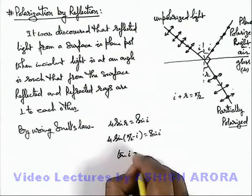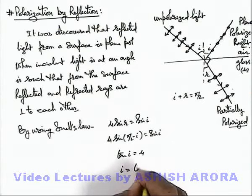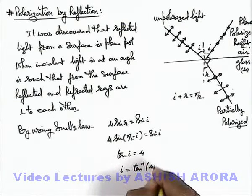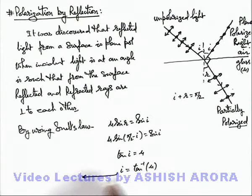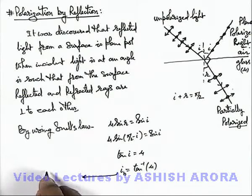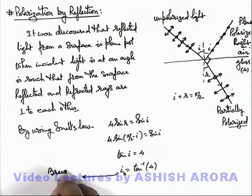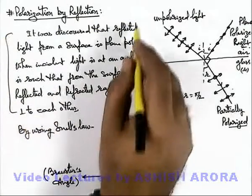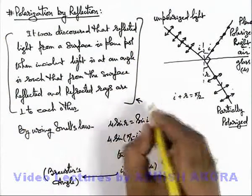We can write tan i equals μ, and the value of i in this situation is tan inverse of μ. This angle i is written as i_B and is called Brewster's angle, and this whole analysis is called Brewster's law.